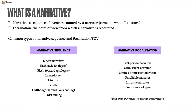Other narrative types include circular, parallel, cliffhanger, and twist ending. For narrative focalisation, the main types are first person narration, omniscient narrator, limited omniscient narrator, unreliable narrator, intrusive narrator, and interior monologue. These are all first or third person, because second person point of view is rather rare in literary fiction — it tends to appear more in nonfiction like self-help books, manuals, or cookbooks, rather than in literary fiction.